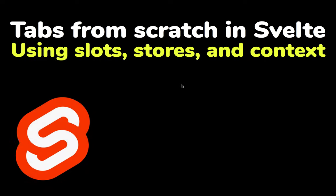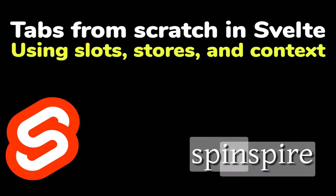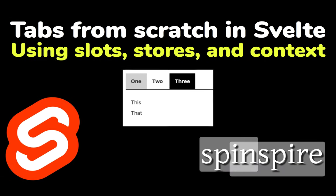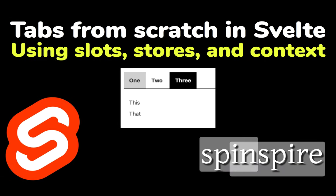Today we want to learn about creating tabs — user interface tabs, web UI tabs — from scratch in Svelte. We will be using slots, stores, and context. These are three concepts within Svelte.